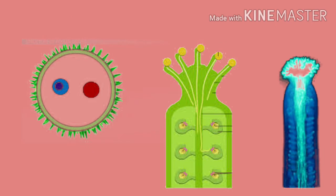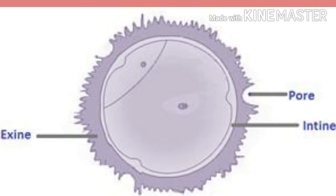The pollen grain has two layers. The outer layer is known as exine. The inner layer is thin and is known as intine. At some places the exine is thin; these areas are known as germ pores through which will emerge the pollen tube.